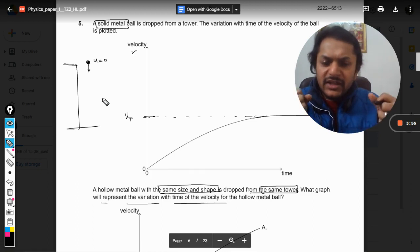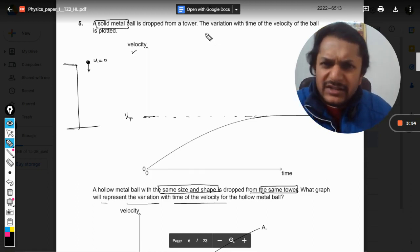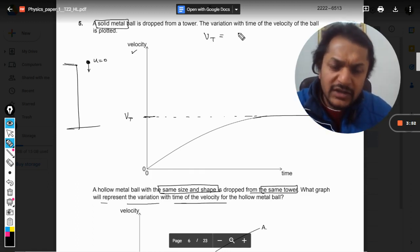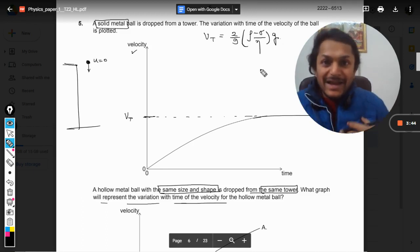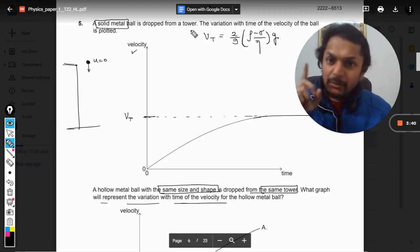This formula is 2 by 9, rho minus sigma divided by eta into G. My experience is that you won't be needing this formula ever in IB, but I'm giving you this question to show you how we derive this expression.